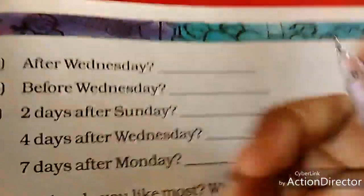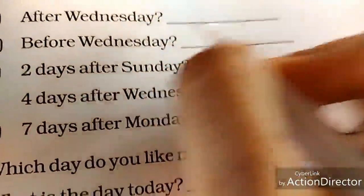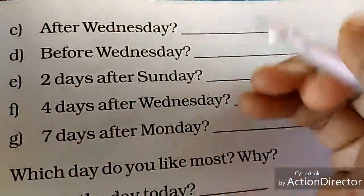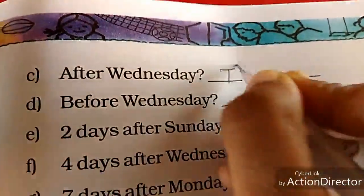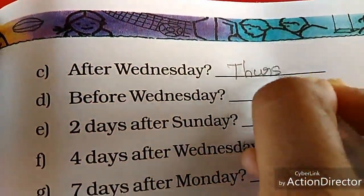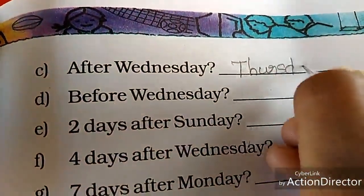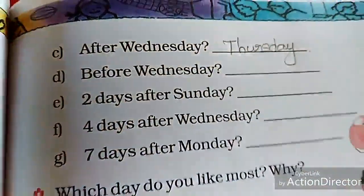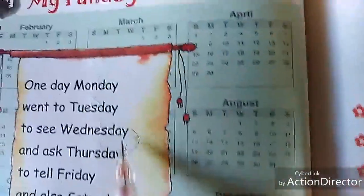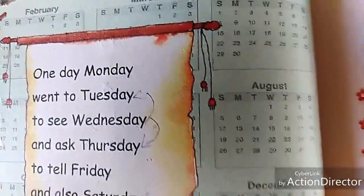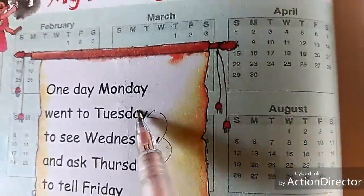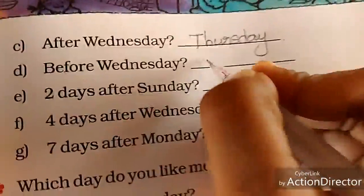Look at the next page. After Wednesday — Wednesday after, which day will come? Wednesday after — Thursday. Before Wednesday, which day will come? Tuesday.